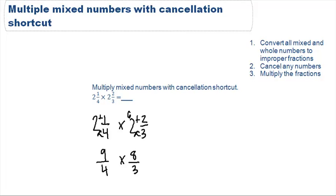Now that we have our two fractions, step 2 says cancel any numbers that you can. You want to look for numbers that have the same factors.